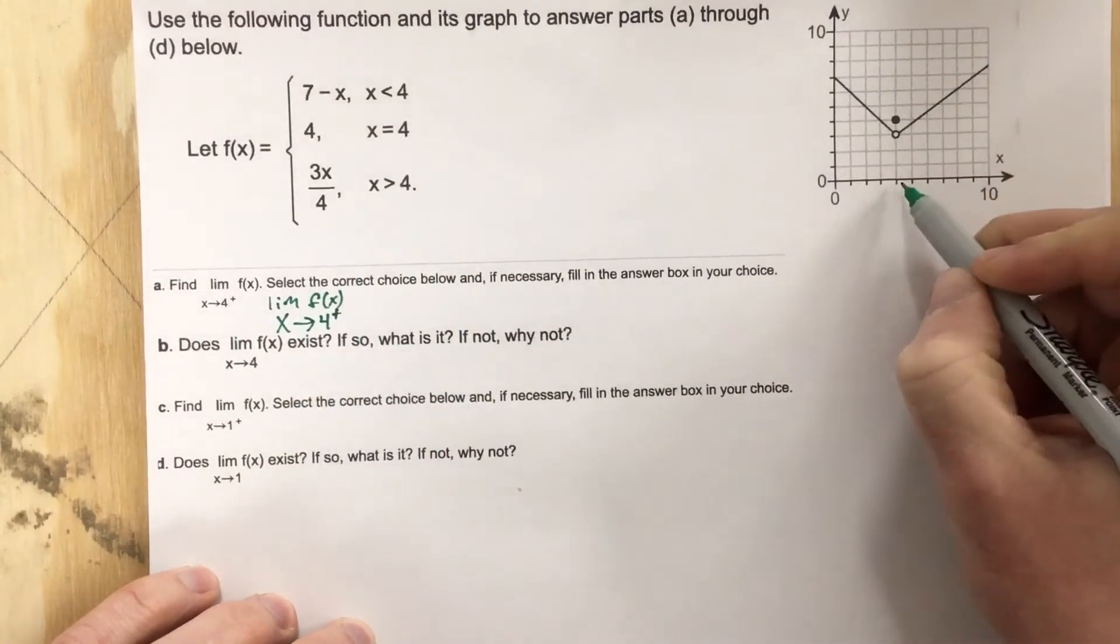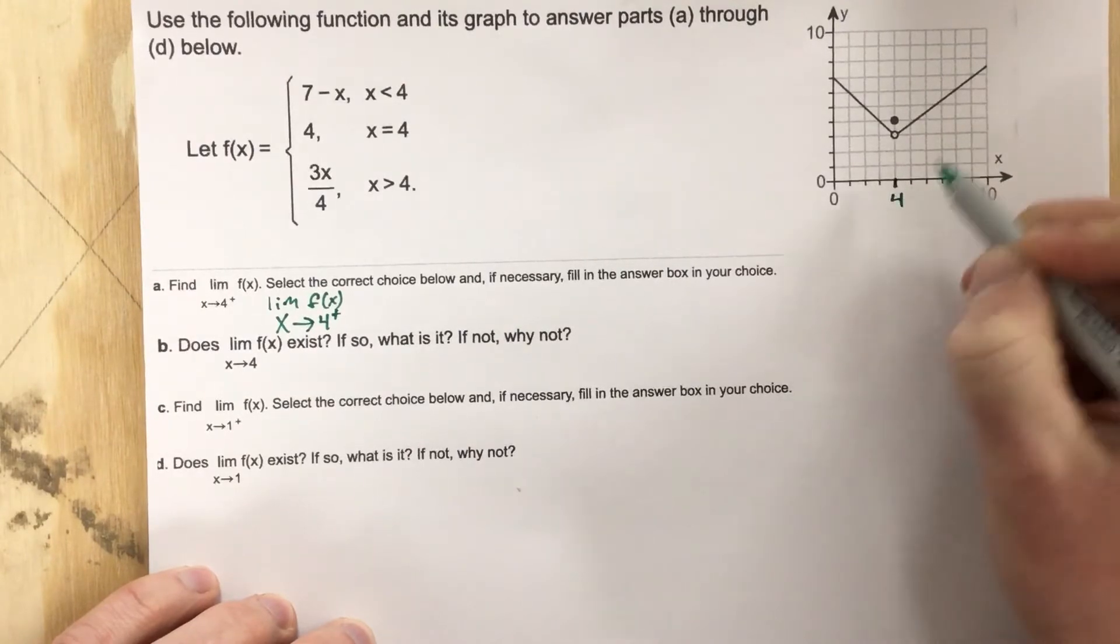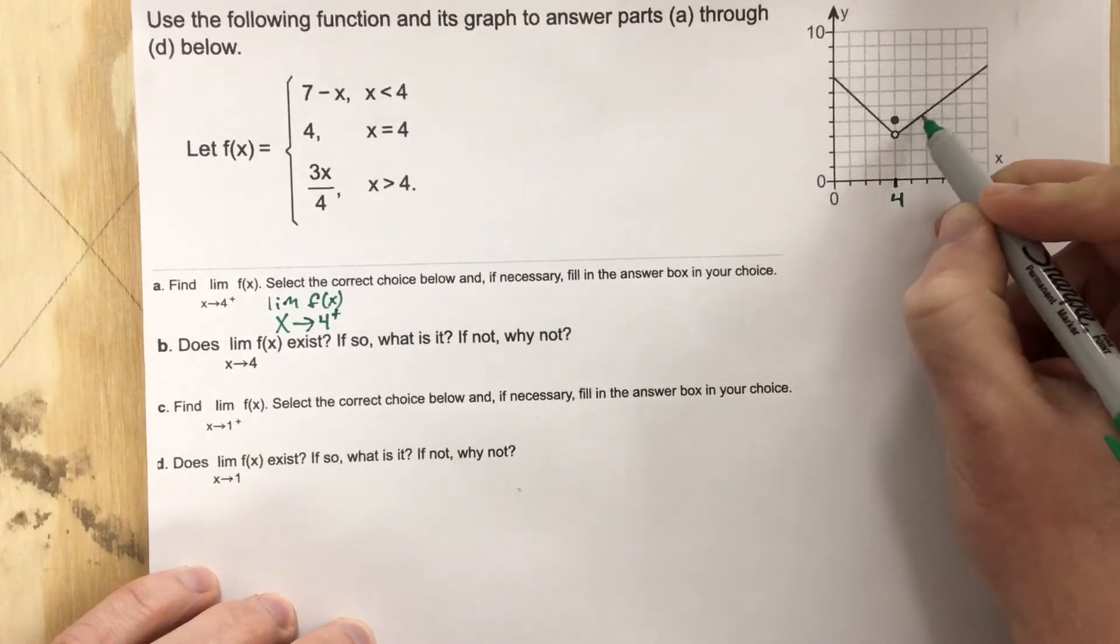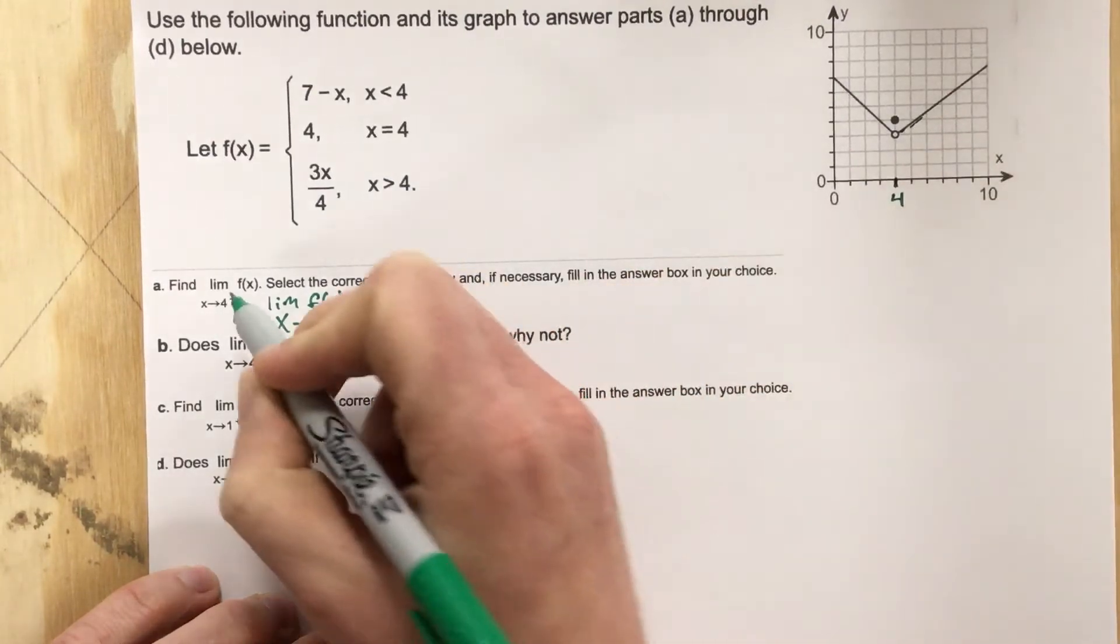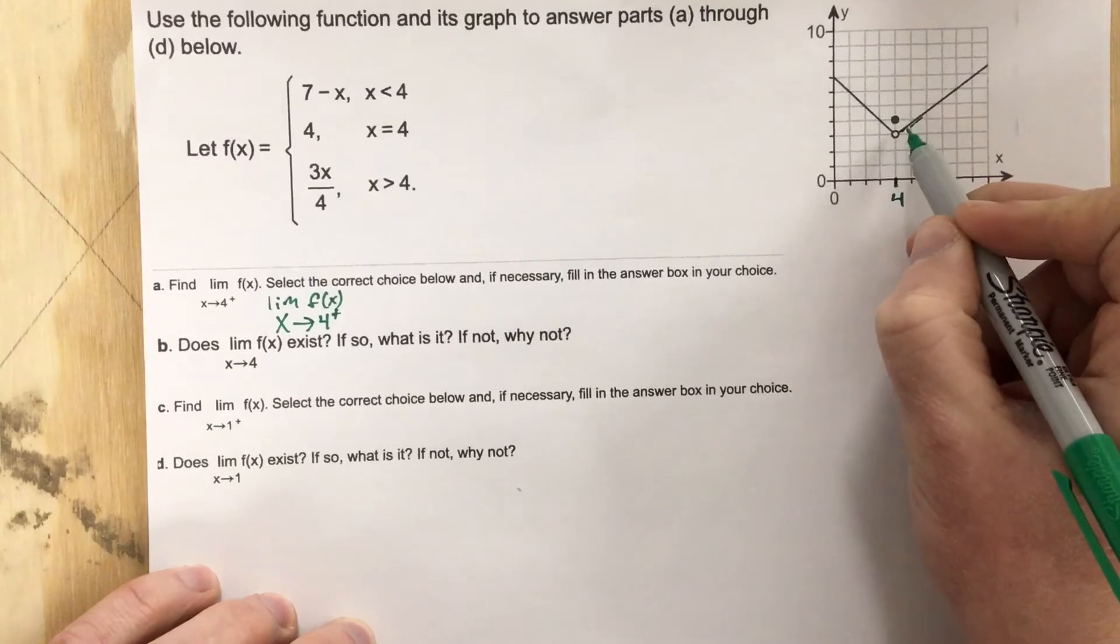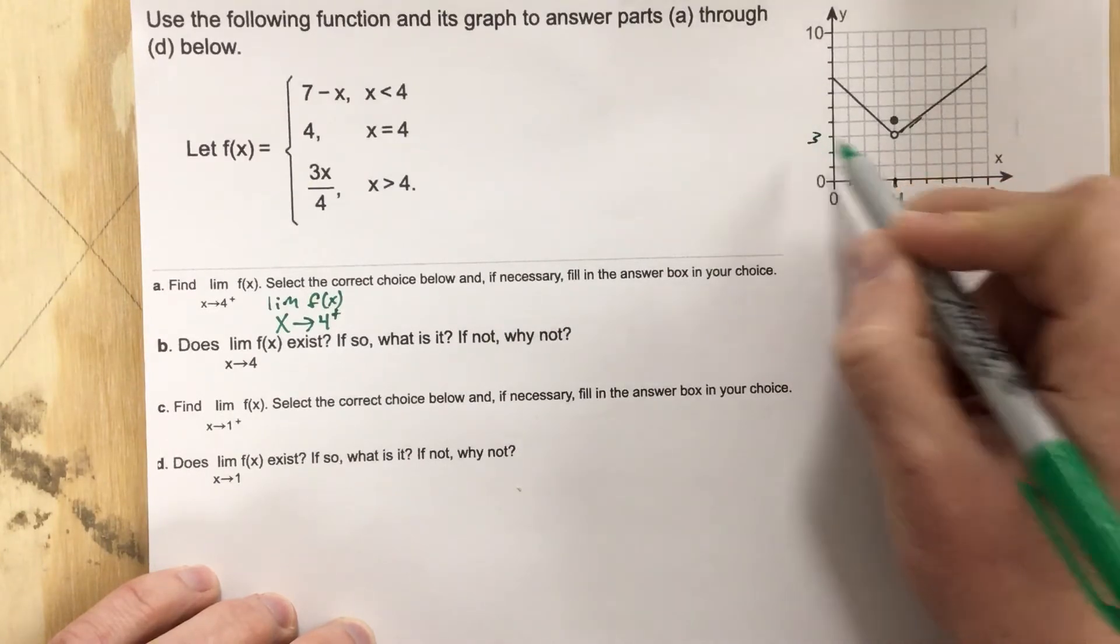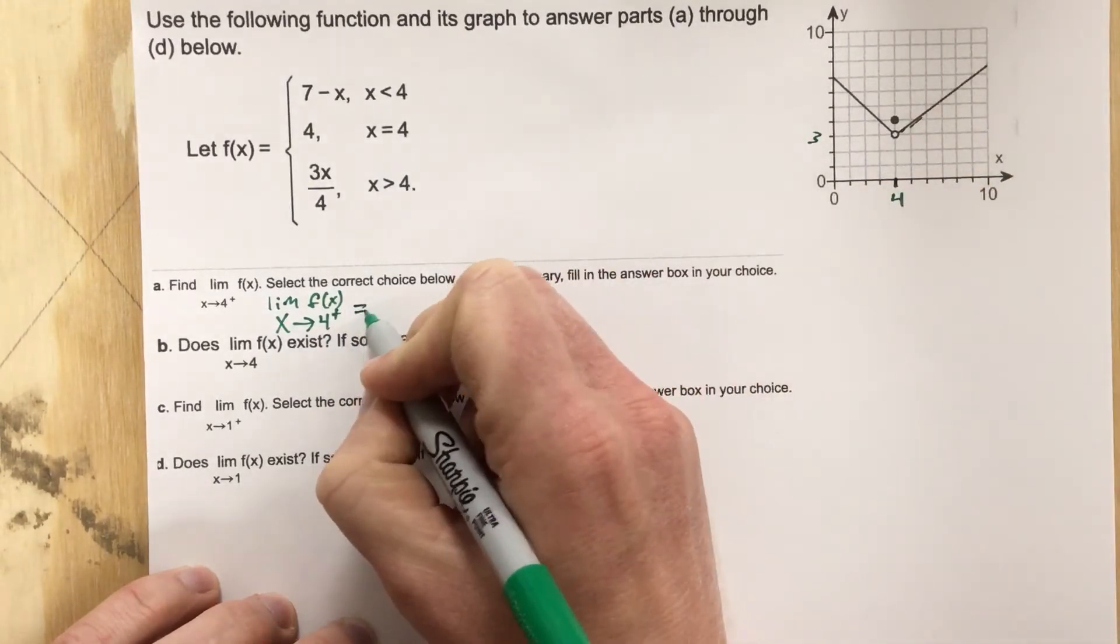Well as we approach this value of 4, which is right here, from the right, what's my limit? As I come from the right, and remember I said to kind of point the arrow that way, as I come from the right I'm getting a y value of 3. So this equals 3.